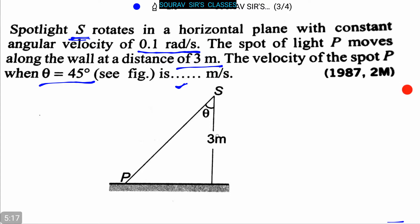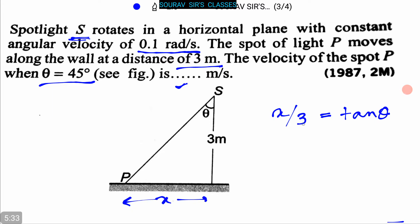From the figure, we can write that x divided by 3 equals tan θ, where x is the distance along the wall. So x = 3·tan θ. Differentiating, dx/dt = 3·sec²θ · dθ/dt.